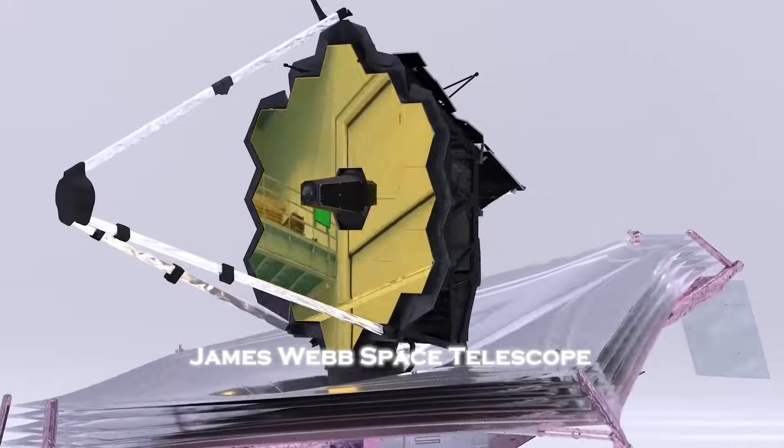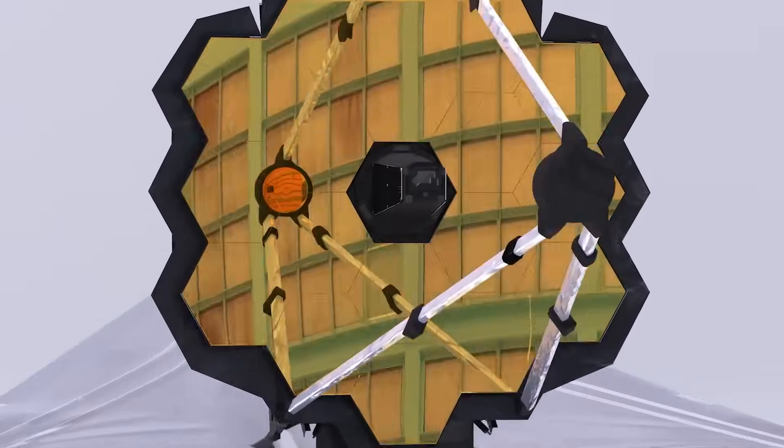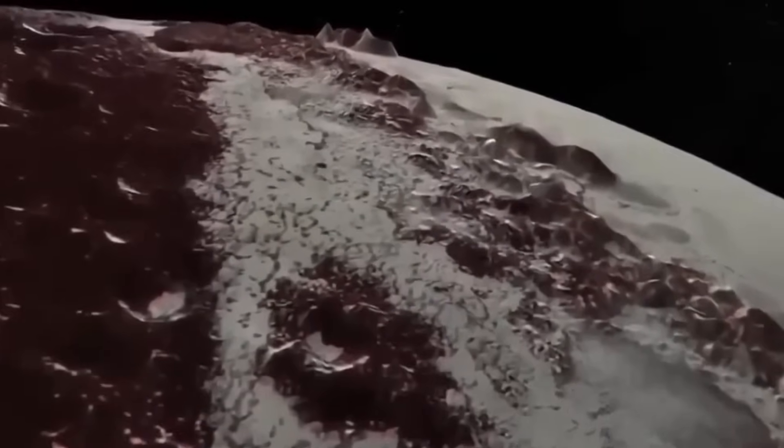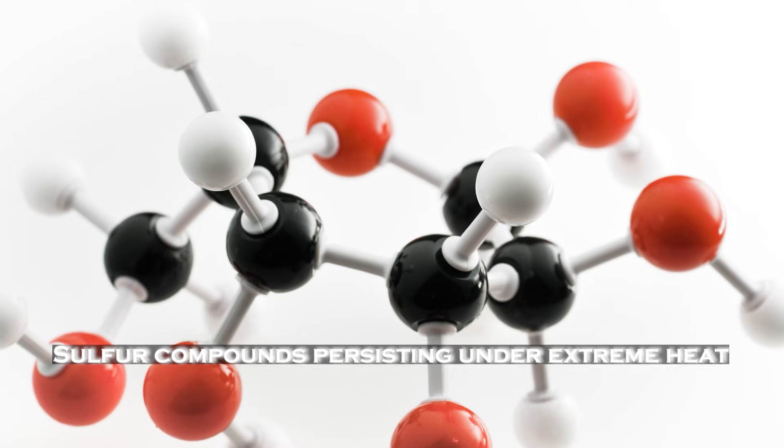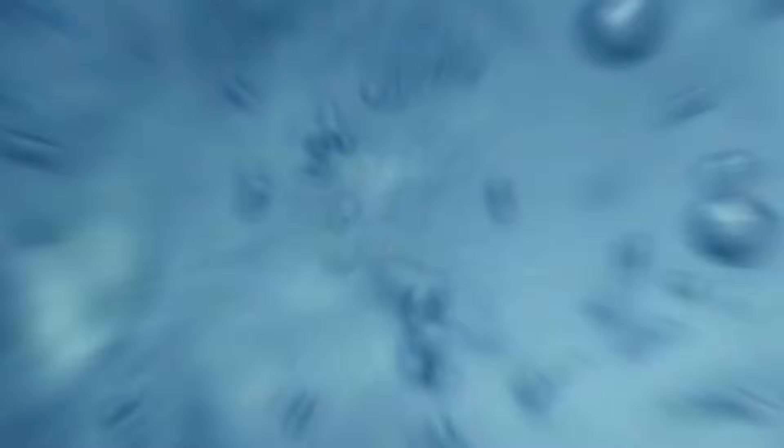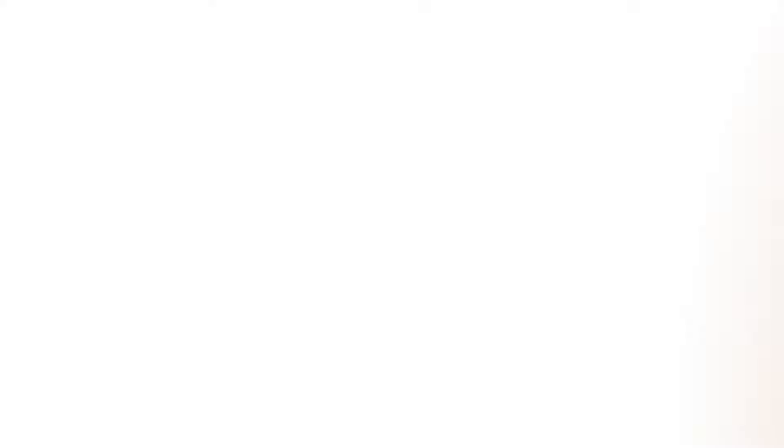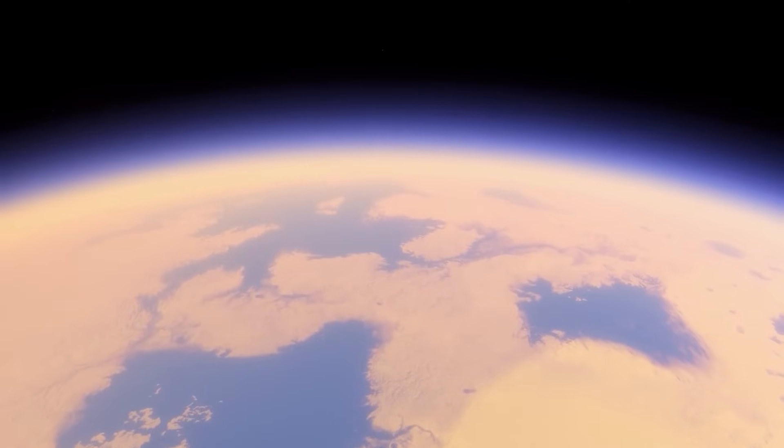Webb's spectroscopic power has revealed chemical combinations in exoplanet atmospheres that should not coexist for long periods of time. Methane appearing alongside carbon dioxide, sulfur compounds persisting under extreme heat,